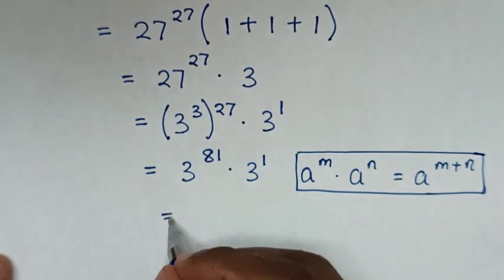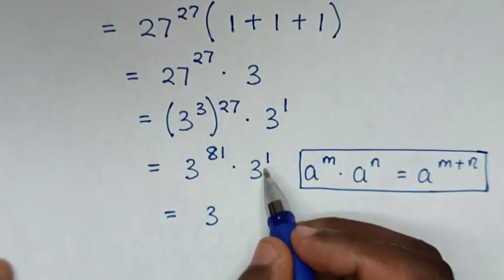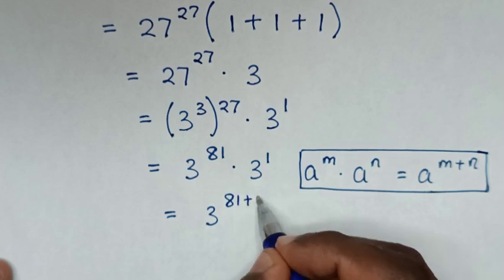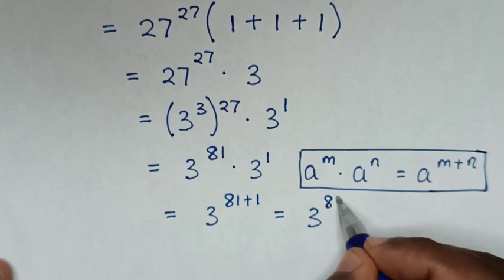So, it will be equal to the same base of 3 to the power of 81 plus 1, which is equal to 3 to the power of 82.